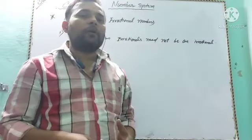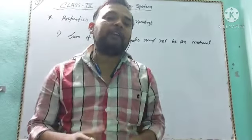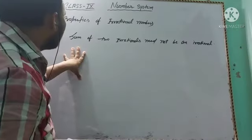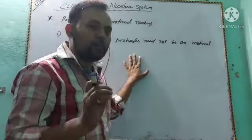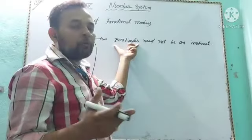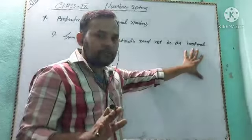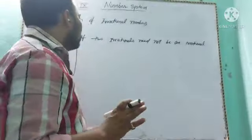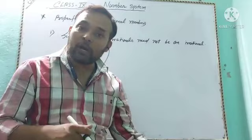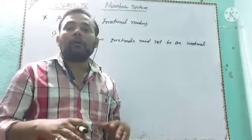Now we will discuss the properties of irrational numbers. The first property: the sum of two irrational numbers need not be irrational. That means the sum of two irrational numbers may or may not be irrational.